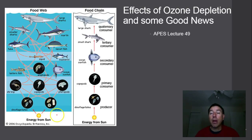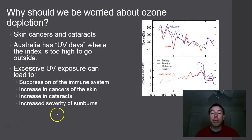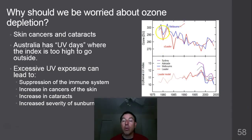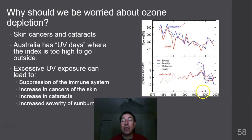Let's talk about some other effects of ozone. Looking at a graph of UV radiation in two cities in Australia, what this shows us is that the ozone layer was thinning over this period from 1975 all the way to about 1999. It looks like that is about the point where we had our lowest ozone levels.